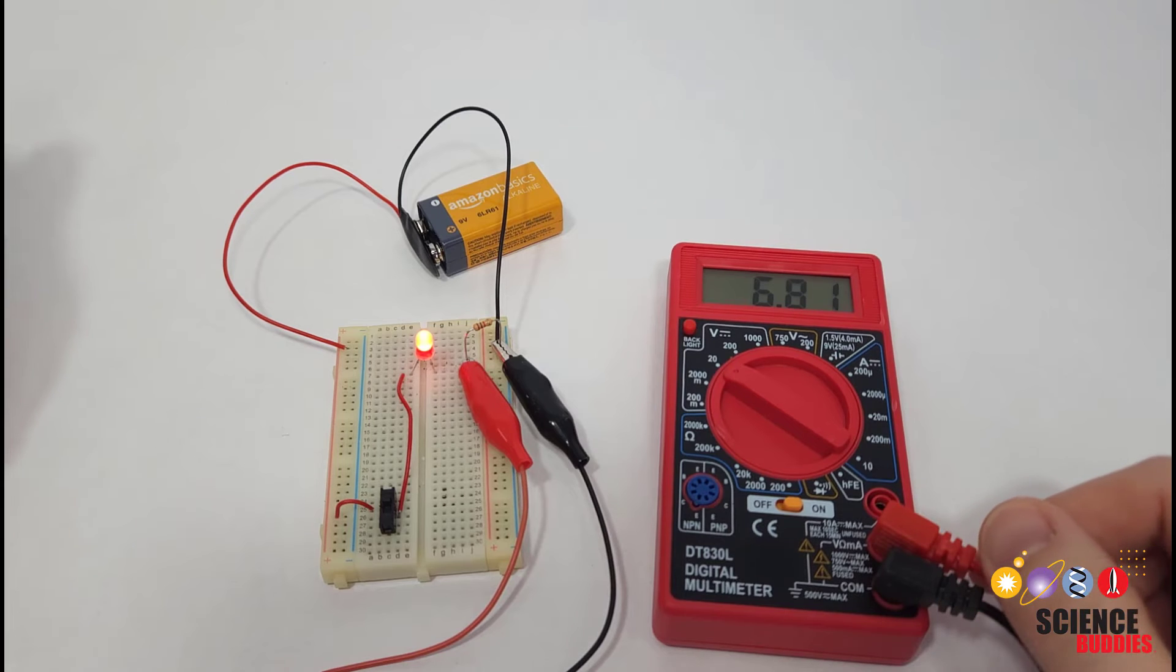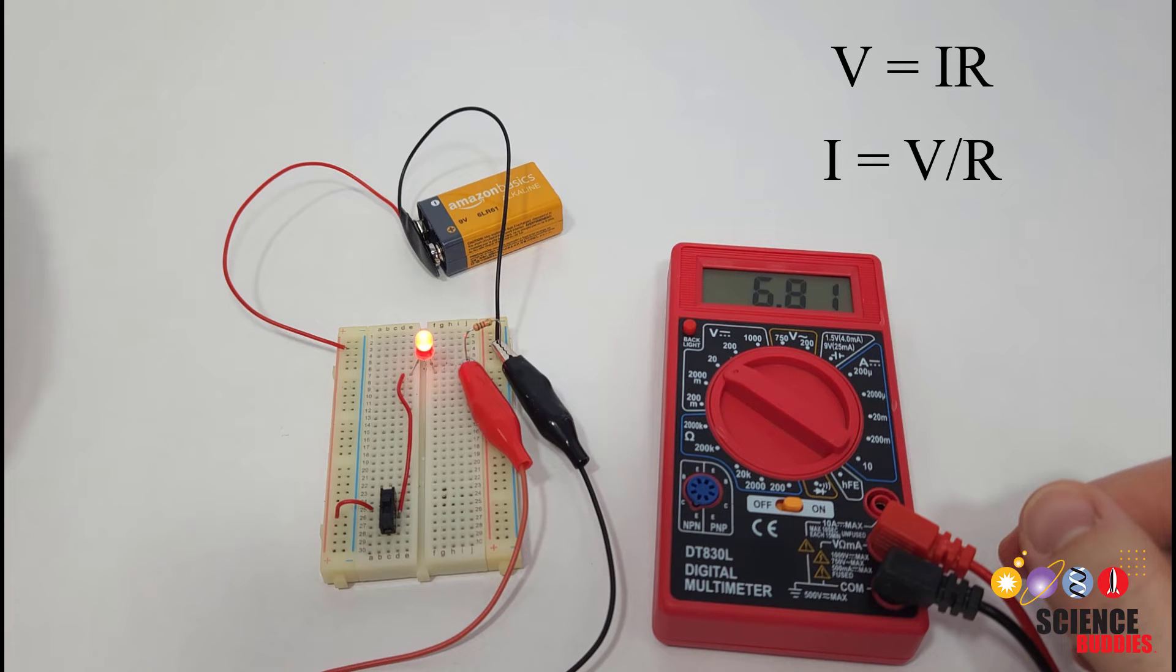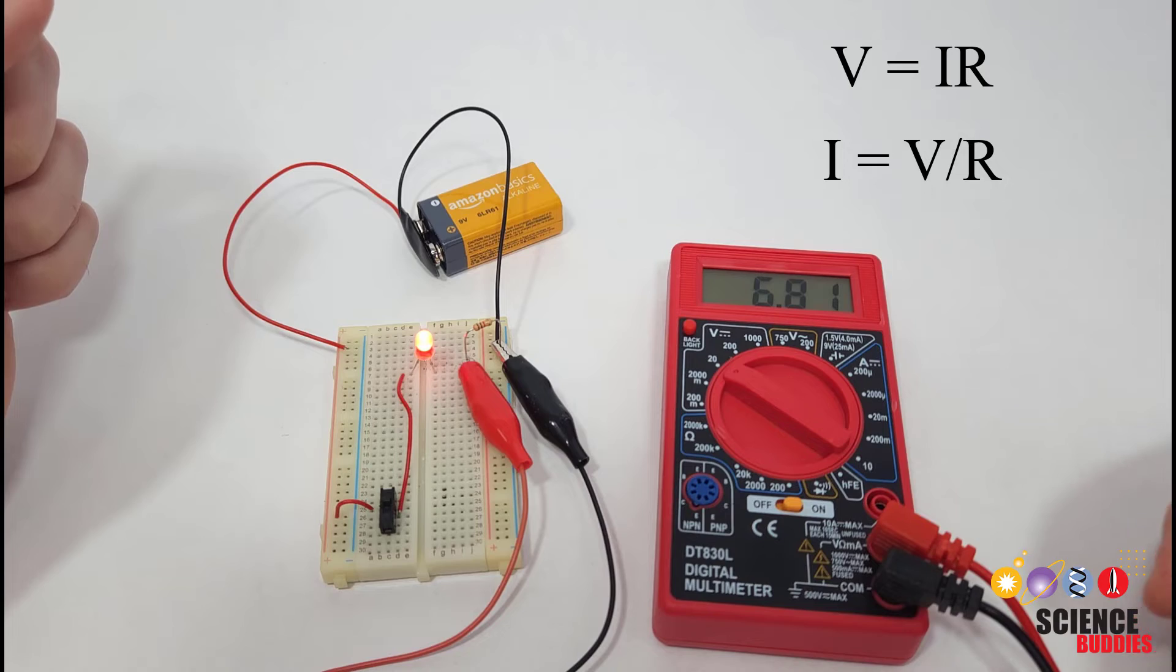The equation for Ohm's law is voltage equals current times resistance, so to solve for current you can just rearrange this equation to current equals voltage divided by resistance. I'm not going to go through the math or an example in this video, but we have that in the written instructions linked in the description.